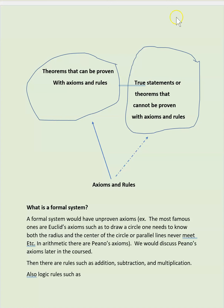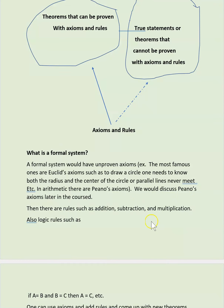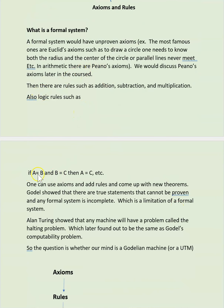What is a formal system? A formal system would have unproven axioms — the axioms are not proven. The most famous ones are Euclid's axioms, such as: to draw a circle one needs two parameters — the radius and the center of the circle — or that parallel lines never meet. In arithmetic there are Peano's axioms, which we will discuss later in the course. Then there are rules such as addition, subtraction, multiplication, and division, and also logic rules such as if A equals B and B equals C then A equals C.